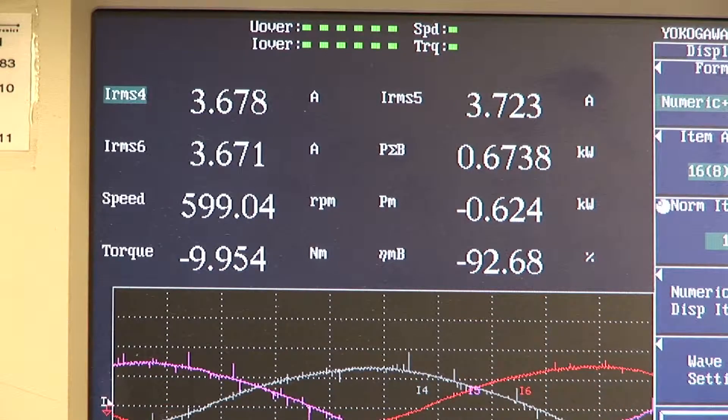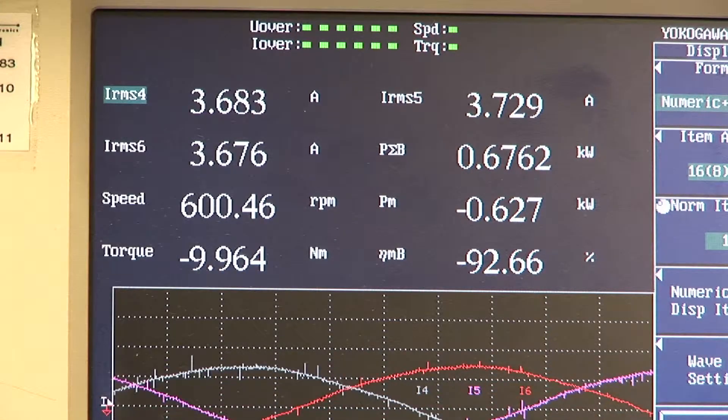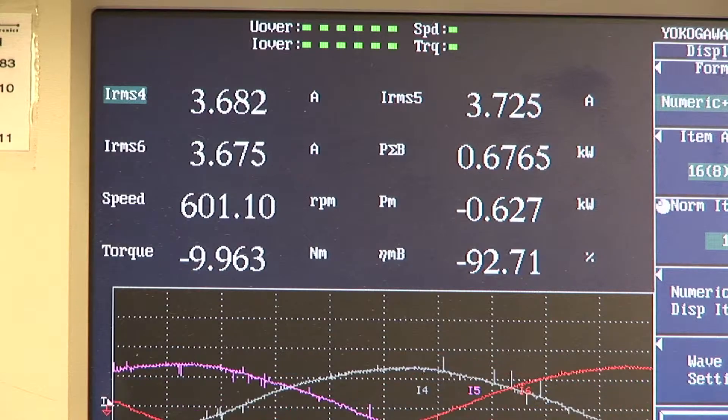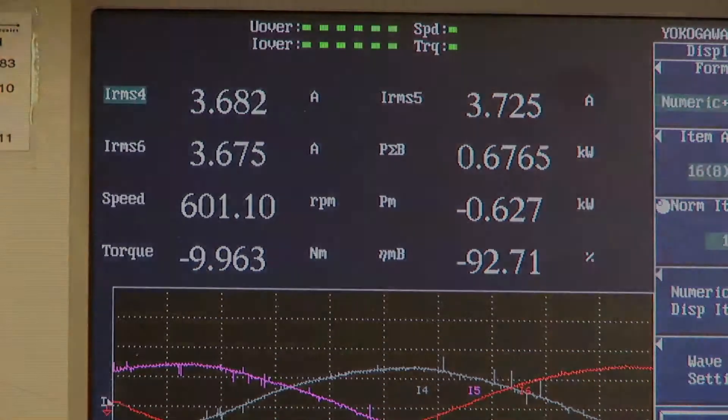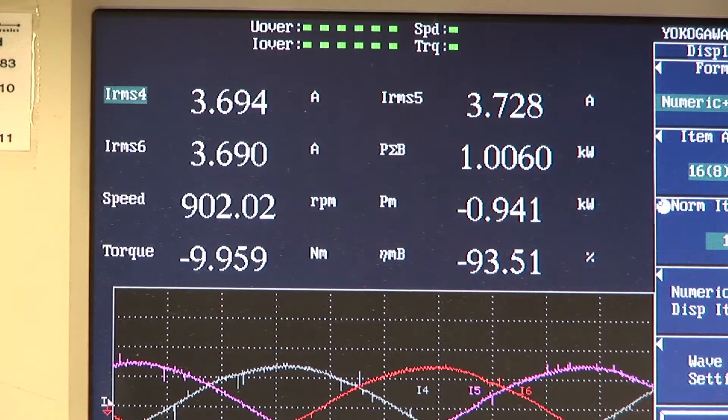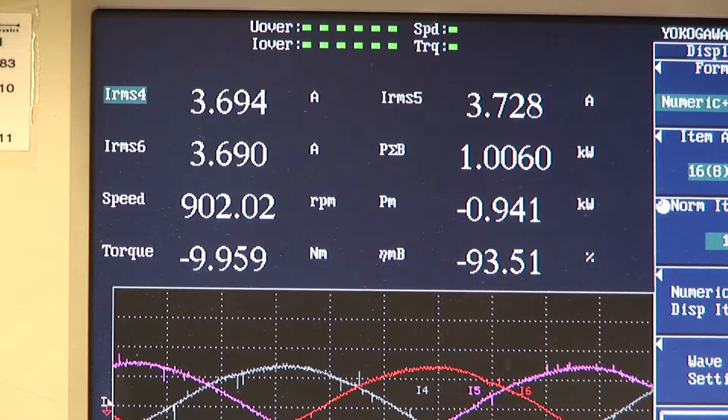We will operate over the motor speed range at half the rated speed and half the rated torque, that is 900 rpm and 10 Newton meters. The motor efficiency is over 93 percent.